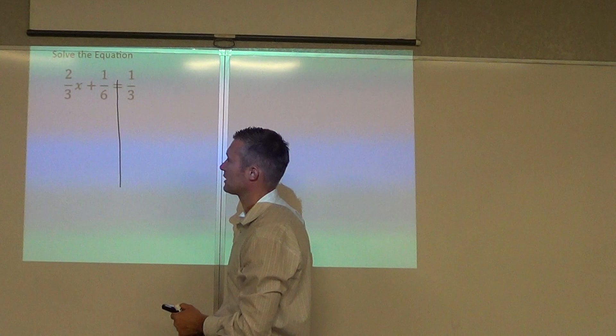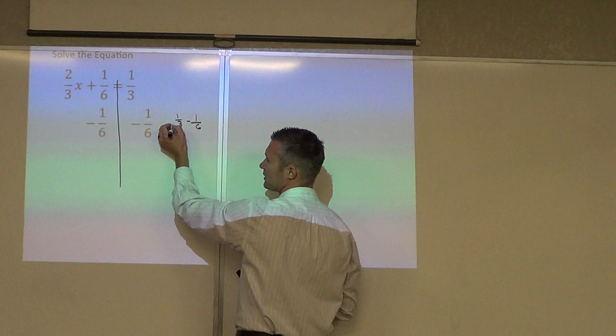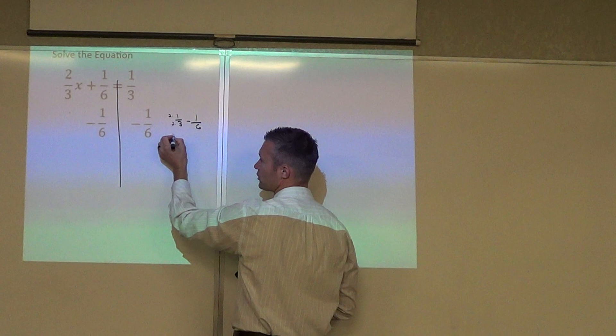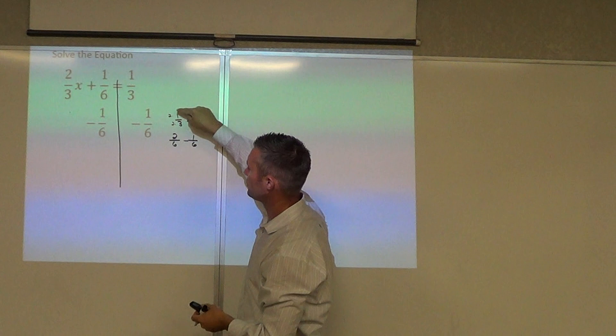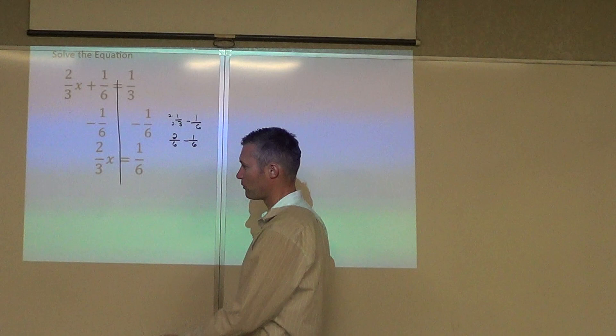Now, to get rid of plus one-sixth, then I would subtract one-sixth. Well, in order to subtract, I need a common denominator. So right here, this is really one-third minus one-sixth. Well, I need a common denominator, so I have to multiply that by two. So one-third is the same as two-sixths. So two times one is two. Two times three is six. So really, two-sixths minus one-sixth would equal one-sixth.